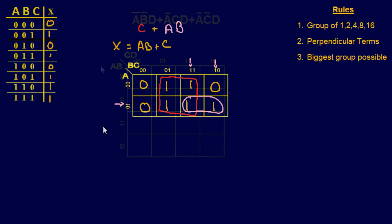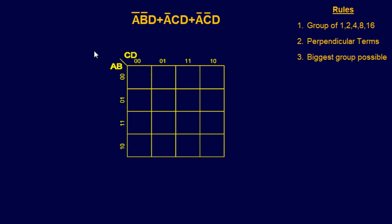Let's move on to a harder problem with four variables. This example has four variables and an equation instead of a truth table, so we'll fill in the K-map using the equation. The first term is A-not, B-not, and D. A-not covers the first two rows, B-not covers its rows, and D covers specific columns. You have to match them up — like connect four — to find the intersecting blocks.